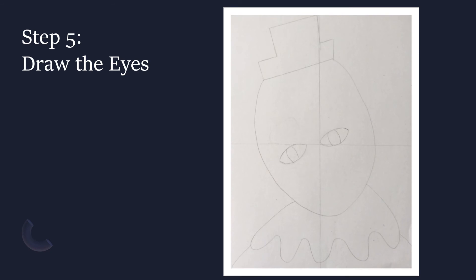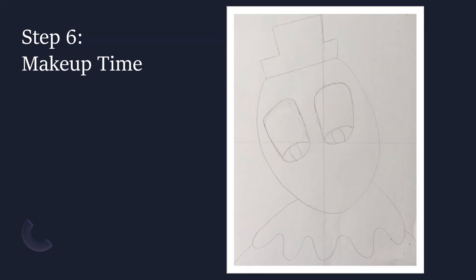Step five: next we're going to draw the eyes. Notice the almond shape I chose — I slanted mine so it appears that my clown's head is tilted to the side, but you can draw yours however you wish. Once you draw the outside of the eye shape, you'll want to draw two lines within each eye to create the pupil. Also, make sure to position your eyes lower on your face, because we'll be adding to them coming up.